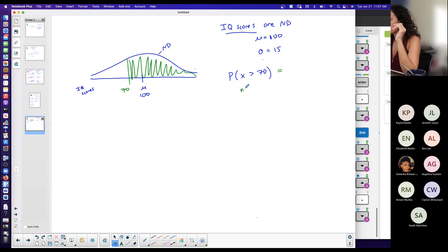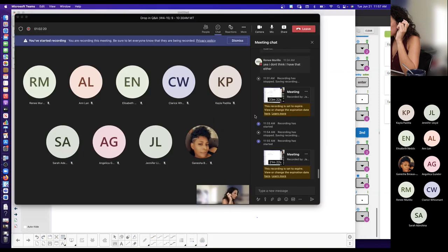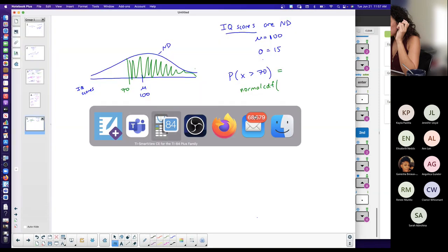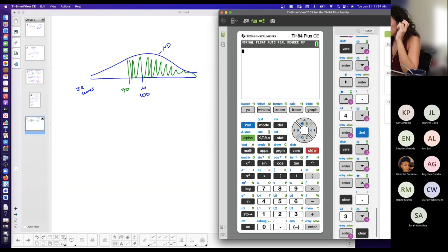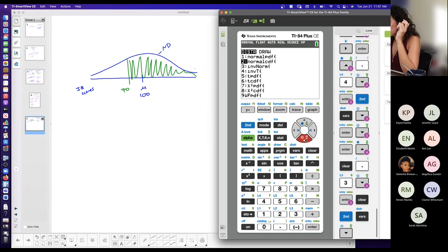So I want probability, which means I want area, which means I use normal CDF. So same concept as before. I want area, I want probability, normal CDF. So I go to 2nd VARS. I go down to normal CDF, which is number 2, and I bound my area.